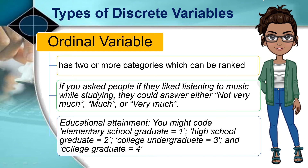In this type, distances between attributes do not have any meaning. For example, if you use educational attainment as a variable on a survey, you might code elementary school graduate as 1, high school graduate as 2, college undergraduate as 3, and college graduate as 4. Higher numbers mean greater education. Even though we can rank this from lowest to highest, the spacing between values may not be the same across levels — the distance between 3 and 4 is not the same as the distance between 1 and 2.